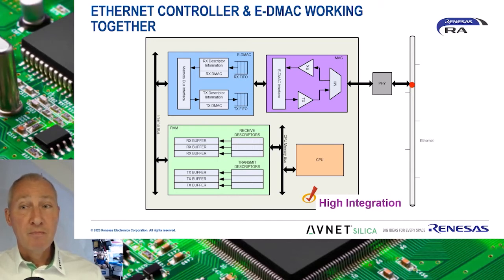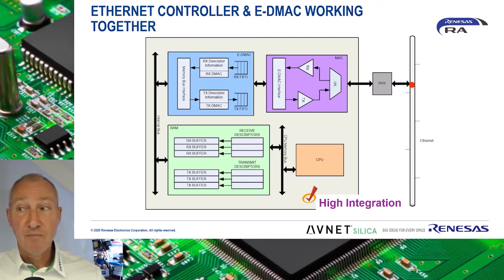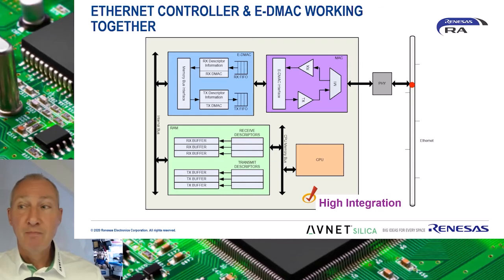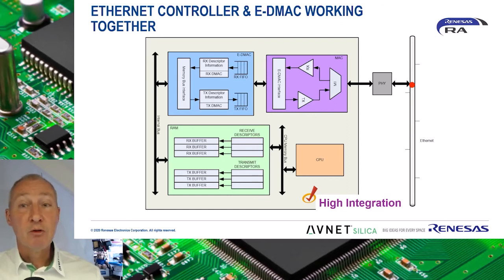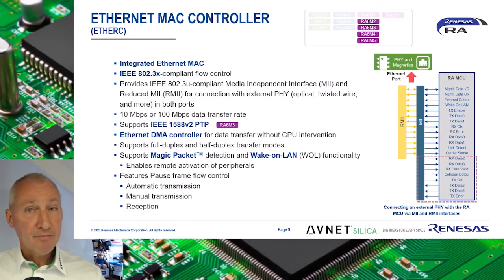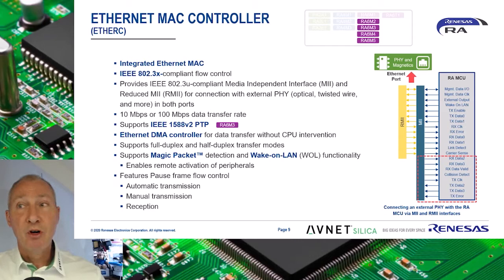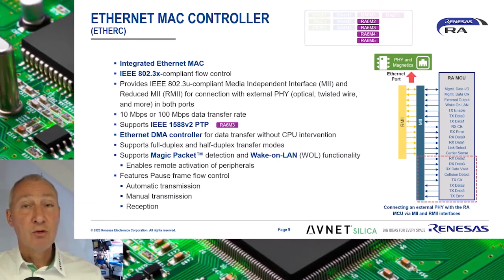Reception of an Ethernet frame is the same but in reverse. The received frame is checked against its destination address and any CRC errors. If the destination address matches and there are no CRC errors, the frame is put into the EDMAC's receive FIFO. The EDMAC then moves the received data into receive buffers pointed to by the receive descriptors. The length of received data determines the number of receive descriptors and receive buffers used. In summary, the Ethernet MAC controller features an IEEE 802.3 compliant MAC, which provides a media-independent interface, the MII interface, and a reduced MII interface, or RMII.